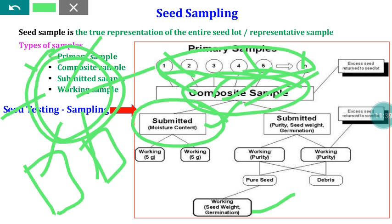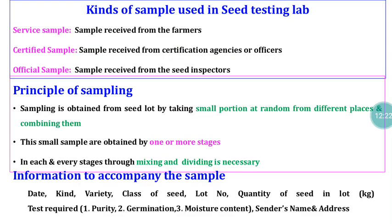Immediately after receiving the submitted sample from producers, seed certification officials, or the seed inspector, the seed analyst — who is empowered to test and verify the quality parameters of the seed sample at the seed testing laboratory — will proceed with further mixing and dividing to arrive at the prescribed quantity of the working sample. Only on that working sample are all seed quality analyses carried out. Normally the working sample should contain 2500 seeds or the prescribed quantity.